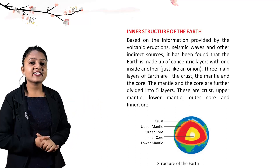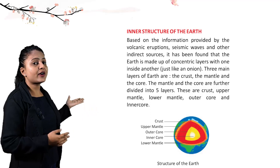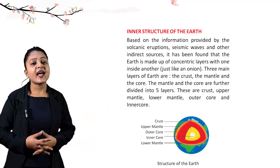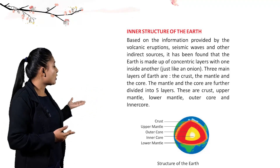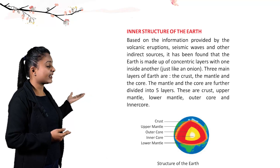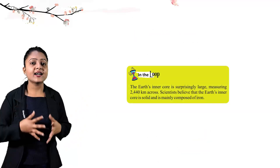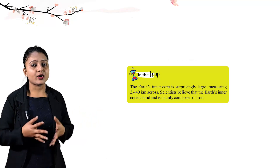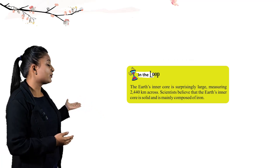The three main layers of the earth are the crust, the mantle, and the core. The mantle and core are further divided into five layers: crust, upper mantle, lower mantle, outer core, and inner core. The earth's inner core is surprisingly large, measuring 2440 kilometers across, and is solid, mainly composed of iron.